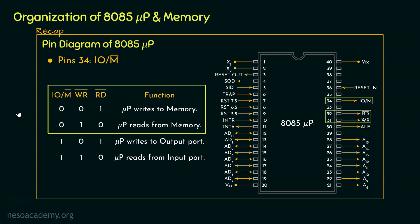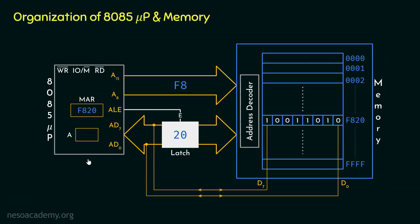Today's topic is reading from the memory. So naturally, we are interested in the combination where the microprocessor reads from memory. Since memory is involved, IO/M bar should be 0. And since we will be reading, not writing, WR bar will be set to 1. However, RD bar will have to be reset to 0. So clearly, in order to facilitate data transfer, we need all these signals.